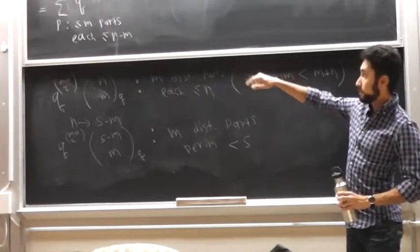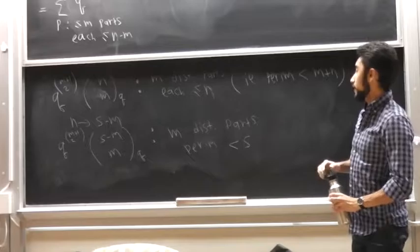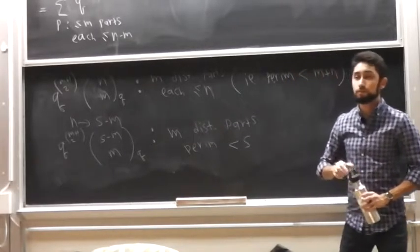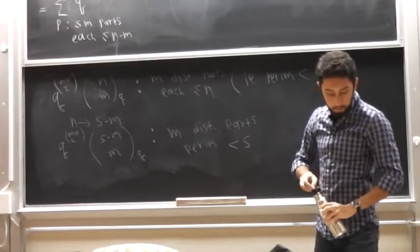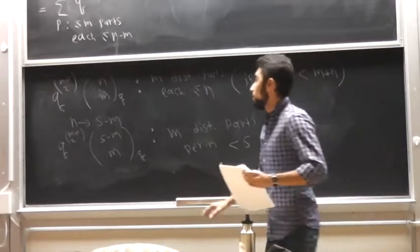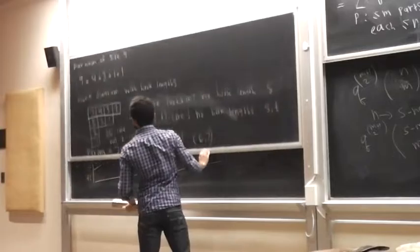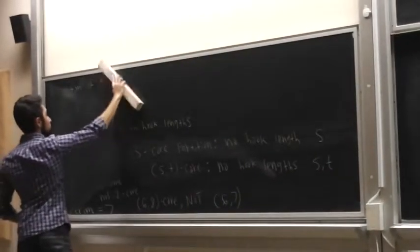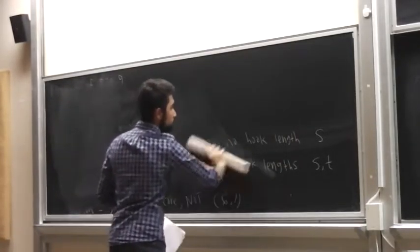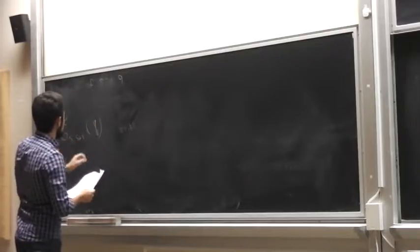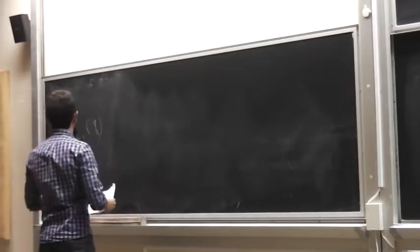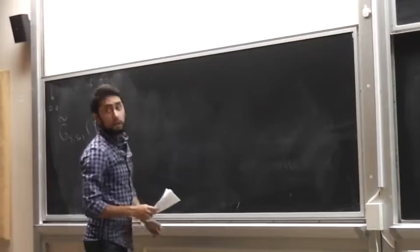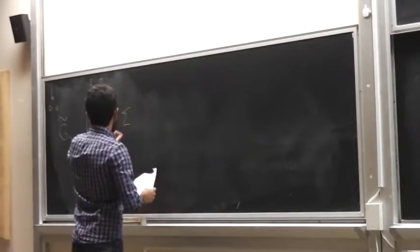So remember, in the beginning, we want the generating function where the perimeter is strictly less than s. And so all we need to do now is sum over the number of parts. So finally, the generating function which we want for distinct part partitions that are s, s plus one, by that theorem we just want the partitions that have distinct parts and perimeter less than s.